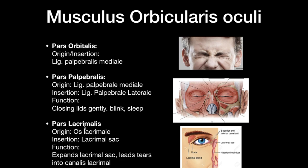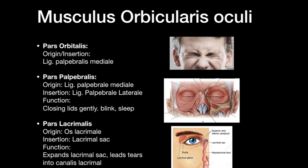Pars lacrimalis originates at the lacrimal bone and inserts at the lacrimal sac. The function of this muscle is to expand the lacrimal sac, leading tears into the canalis lacrimalis in the nose. That covers the musculus orbicularis oculi.